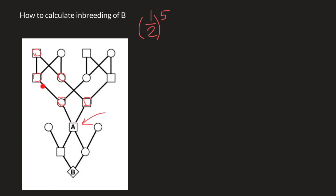But we have here another loop. Let me use a different color this time. One node, second, third, fourth, and fifth. So we have to add these two probabilities — that individual A would have two alleles from the same common ancestor. In one case, this is going to be one common ancestor; in the other case, it is going to be a common ancestor from both the father's side and the mother's side. Adding these gives us one-half to the power of five plus one-half to the power of five, which equals one-half to the power of four.